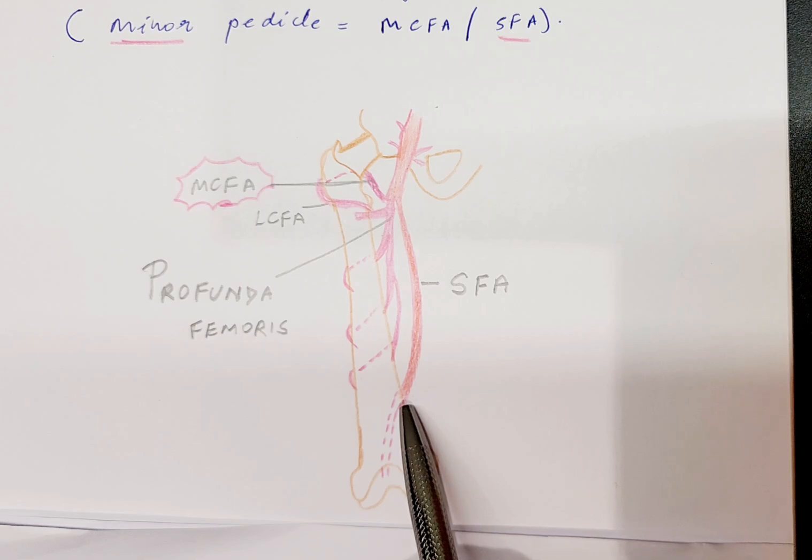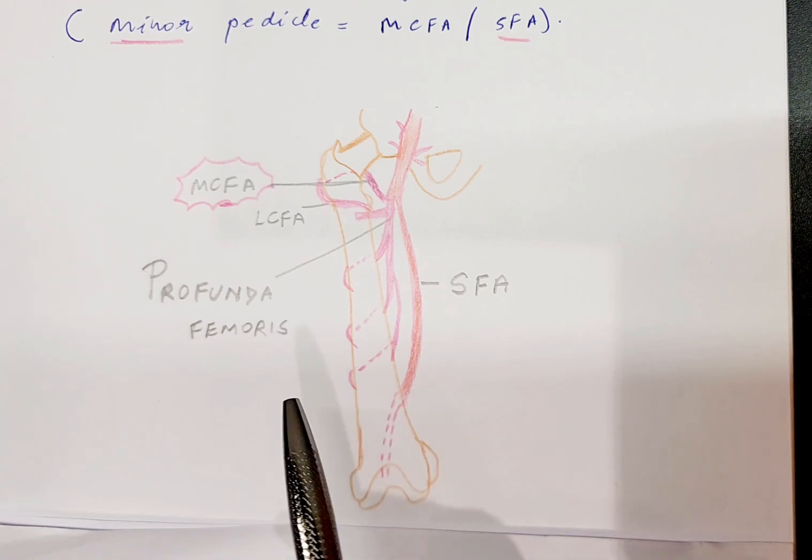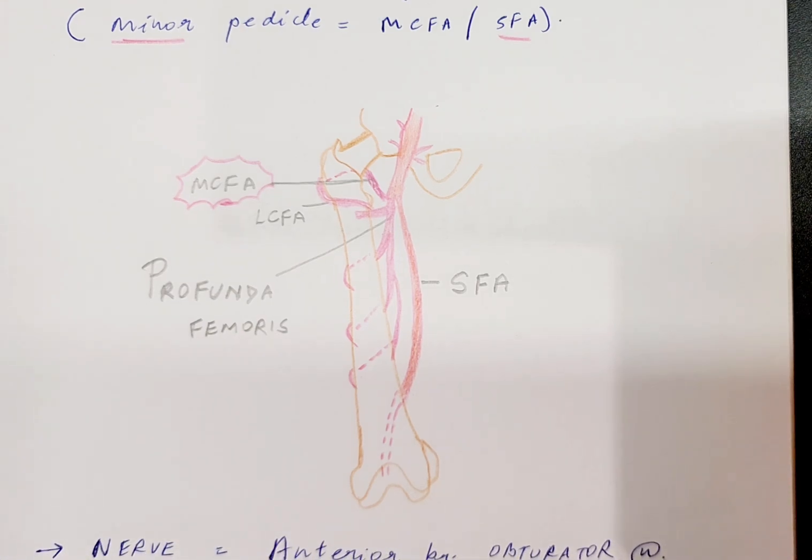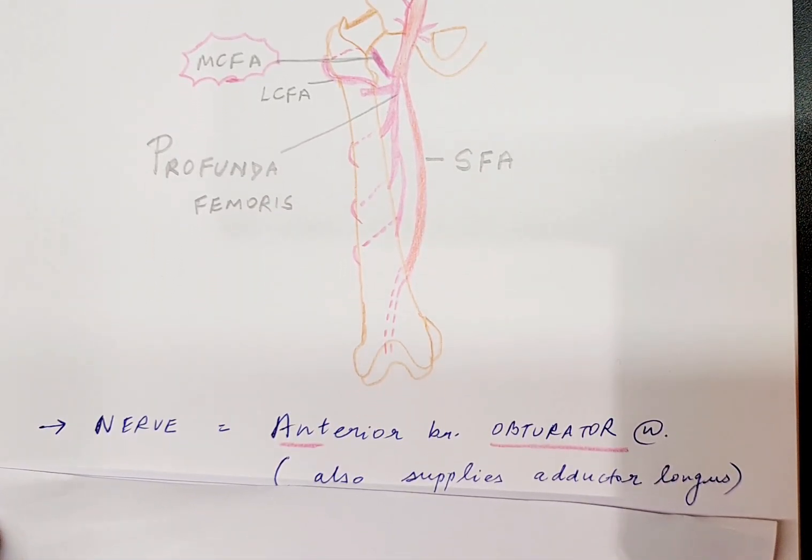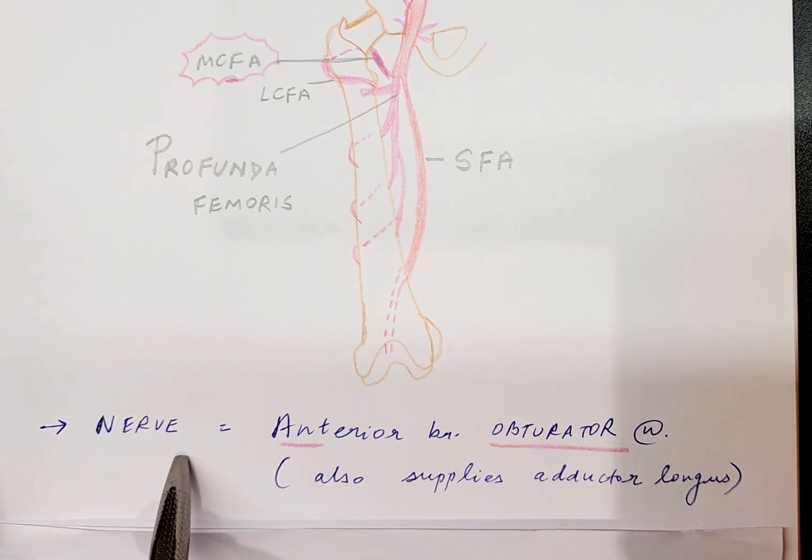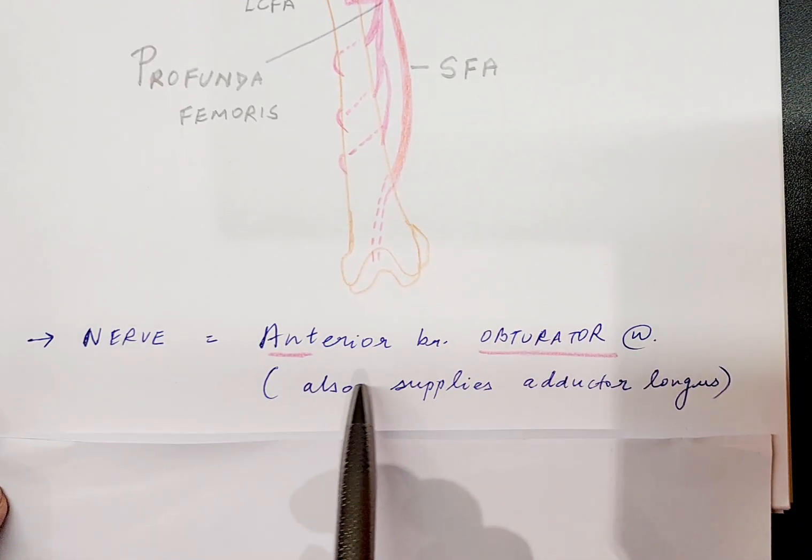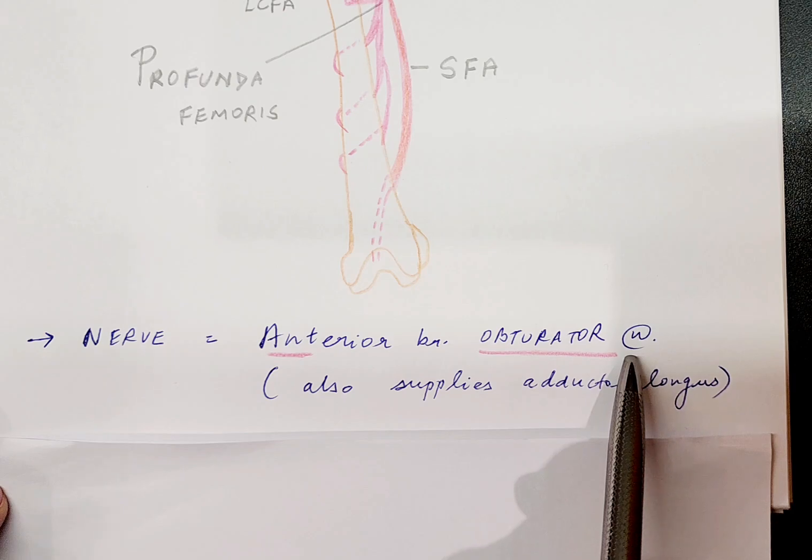As we have seen, why is this muscle preferred in a lot of cases is because it can be harvested as an innervated flap. So it is important to know where does the nerve supply come from. The gracilis muscle is supplied by the anterior branch of the obturator nerve. This branch also supplies the adductor longus.